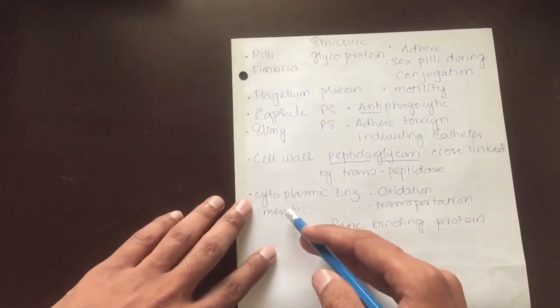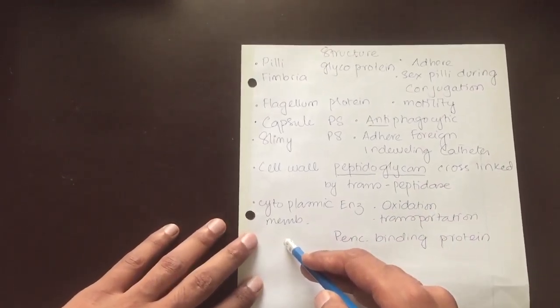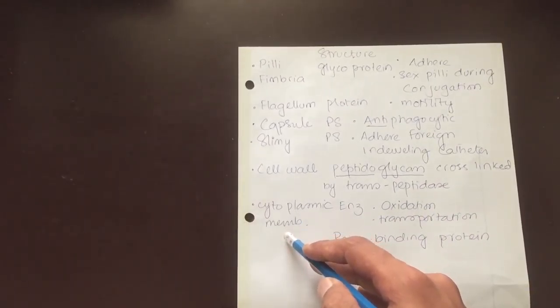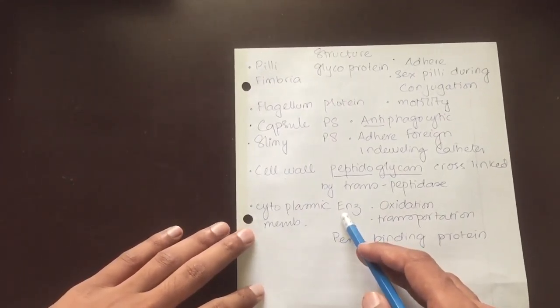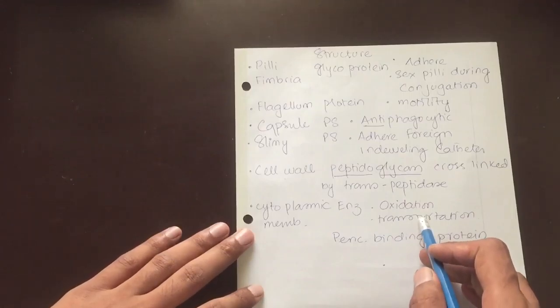The peptide bonds are cross-linked by transpeptidase, which is a target of antibacterial drugs. Then we have the cytoplasmic membrane. Cytoplasmic membrane has penicillin-binding proteins and enzymes for transportation and oxidation.